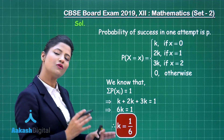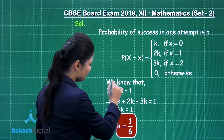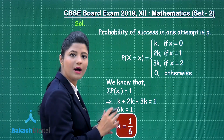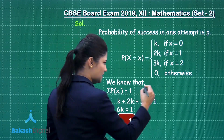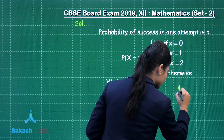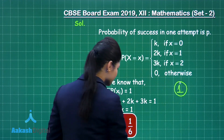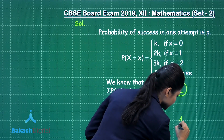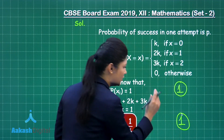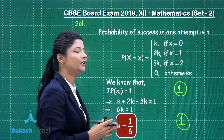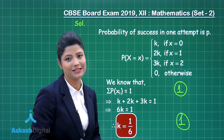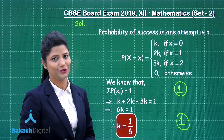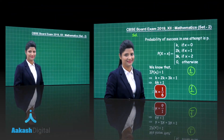This is also a 2-marker question. When you obtain the step showing that the sum of all probabilities equals 1, you get 1 mark. When you solve completely to get k = 1/6, you get the remaining 1 mark, giving a total of 2 marks.